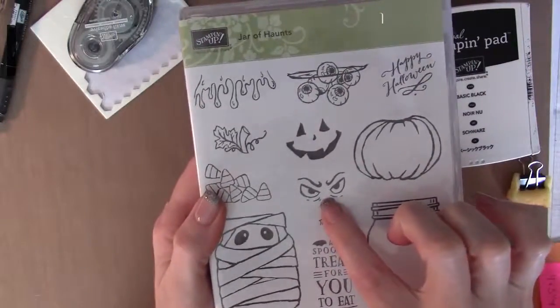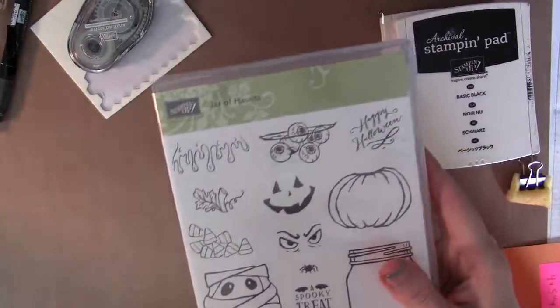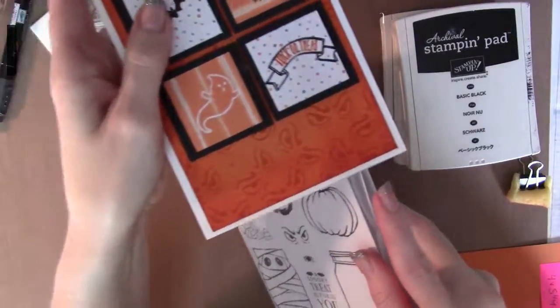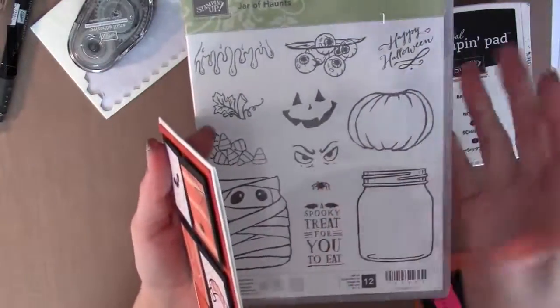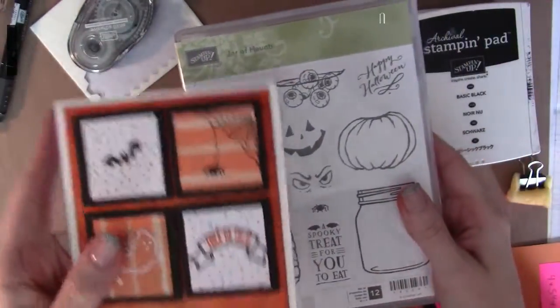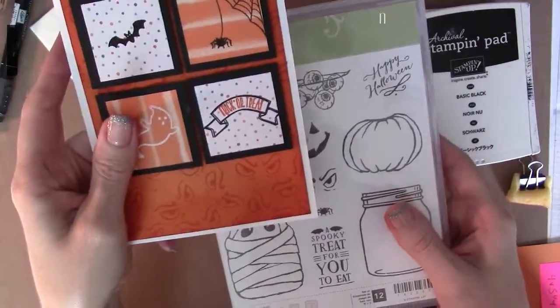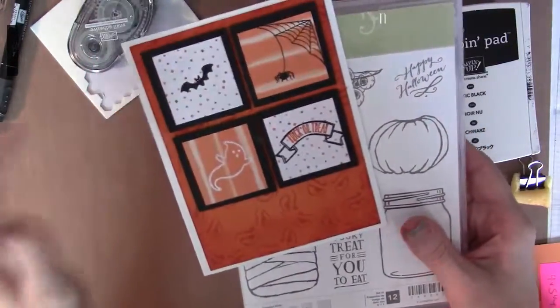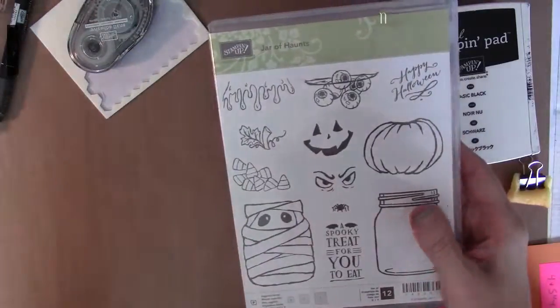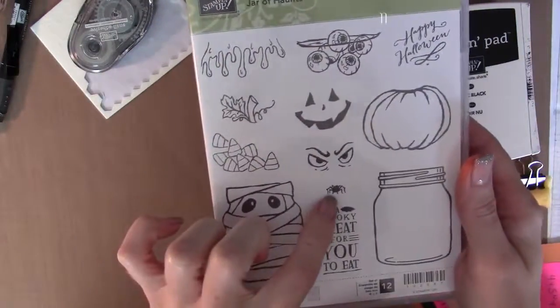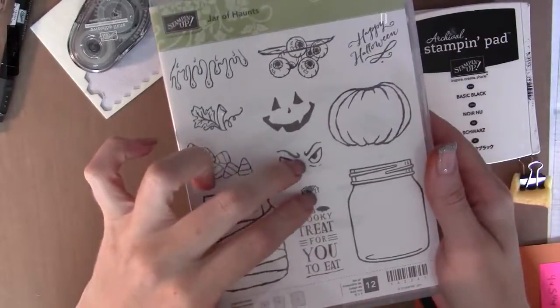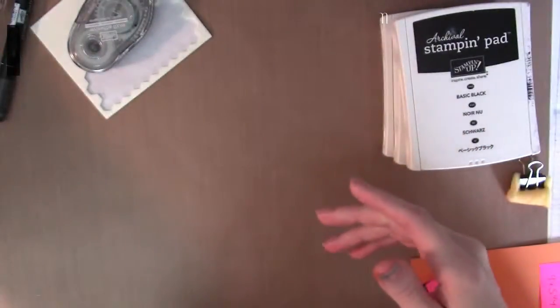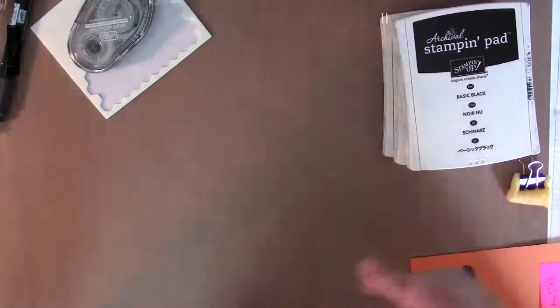Now we've got some Jar of Haunt stuff too. This is optional. We're gonna use the little creepy frightful eyes. This is going to make our own background paper here. I think this is a fantastic use for these little eyes because I had no idea what else to do with them. We're also gonna use this little spider. Again, these two are optional. If you don't have this stamp set, don't worry about it.